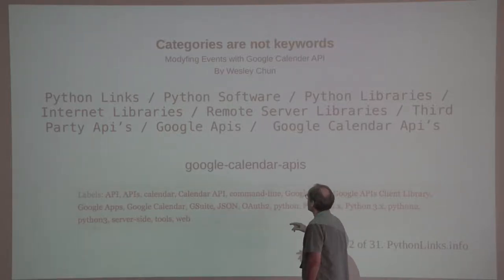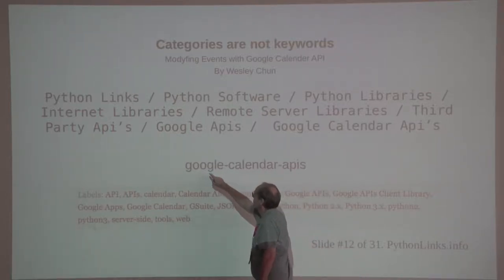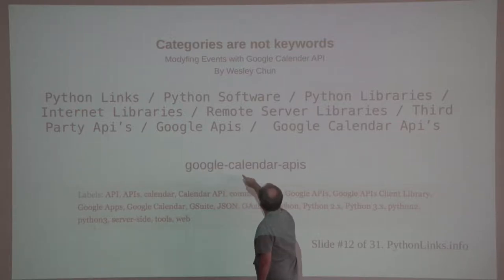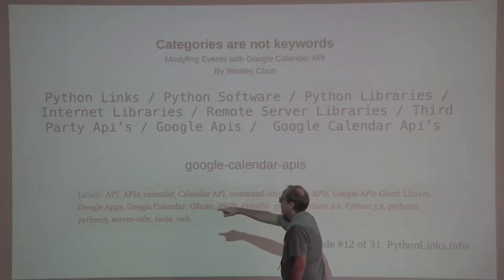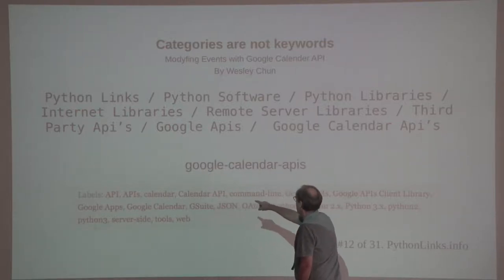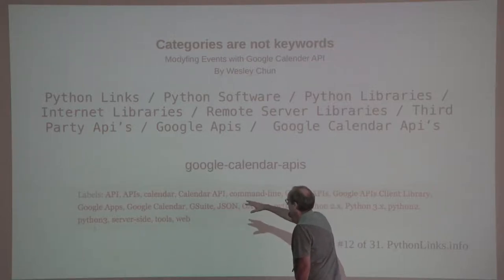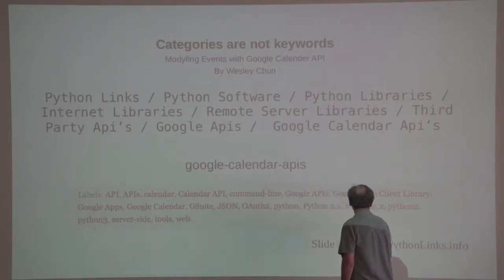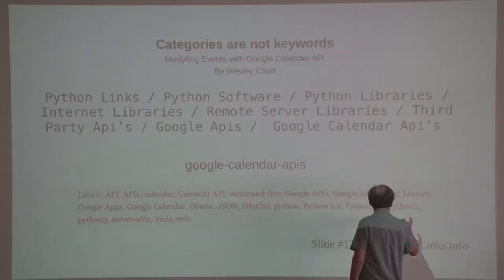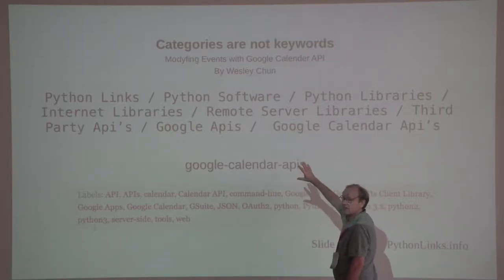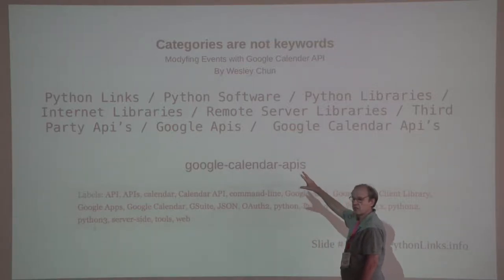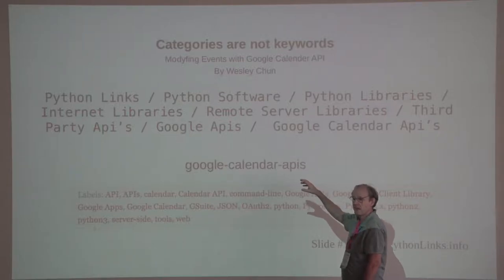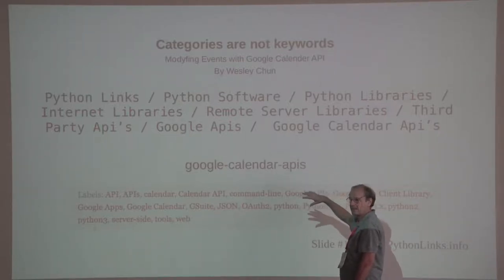Compare that to the name of the category — Google Calendar APIs — versus all the keywords he put in there: Calendar API, Command Line, Google APIs, client libraries. Just using a taxonomy, it's much clearer where it belongs, much easier to find it, and much easier to find other articles that are very closely related in the same category.